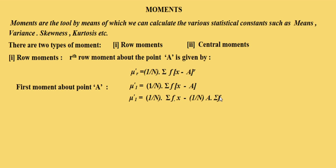In case of a frequency distribution, summation f is denoted by capital N. These terms cancel out, and 1 by n into summation fx is equal to the mean of the given frequency distribution. If we denote the mean by x bar, then the first raw moment about arbitrary point A becomes mu 1 dash equals x bar minus A.